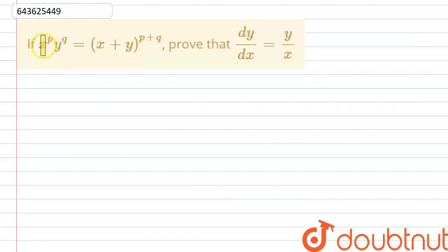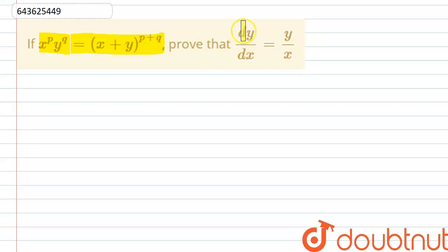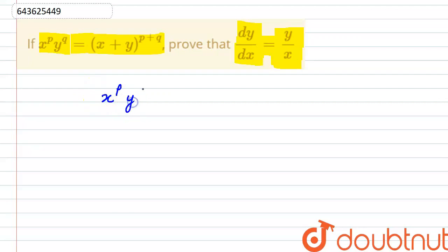Hello everyone. Our question is: if x to the power p into y to the power q is equal to x plus y to the power p plus q, then we have to prove that dy by dx is equal to y by x.